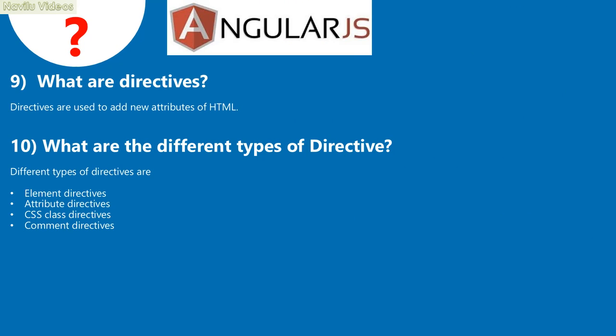What are directives? Directives are used to add new attributes to HTML. The different types of directives are: Element directives, Attribute directives, CSS class directives, and Comment directives.